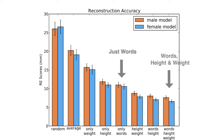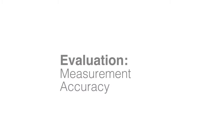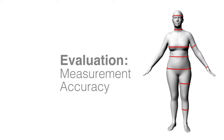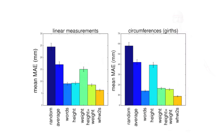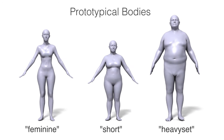We also took the estimated body shapes and computed anthropometric measurements like limb lengths, stature, and chest circumference. Remarkably, words alone predict linear measurements with an error below 1 centimetre on average, and circumferences to about 1.4 centimetres.